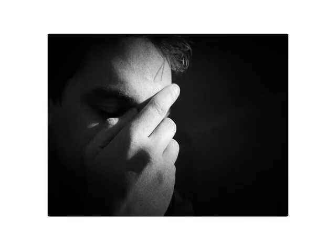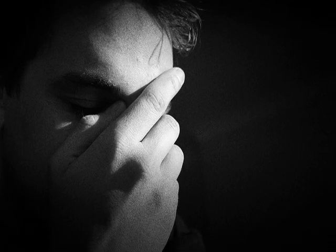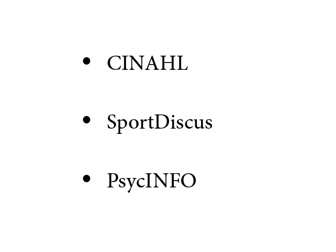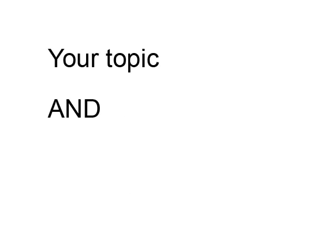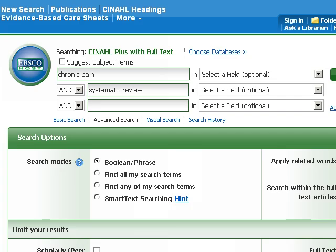Sometimes you won't get any results in PubMed or Cochrane Library, or the results you receive just aren't satisfactory. When this happens, widen your search by trying one or more of these other databases: CINAHL, SportDiscus, or PsychInfo. In these databases, search by entering your topic and Systematic Review — for example, enter Chronic Pain and Systematic Review.